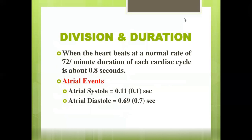The average heartbeat is 72 beats per minute, and the duration of one cardiac cycle is 0.8 seconds. Within this 0.8 seconds, atrial systole lasts 0.1 seconds and atrial diastole lasts 0.7 seconds. Atrial systole (pumping) is very fast, while diastole (filling) takes a little longer.